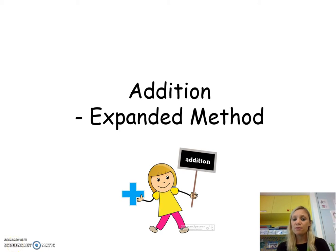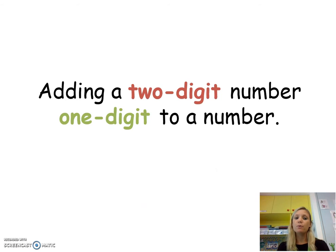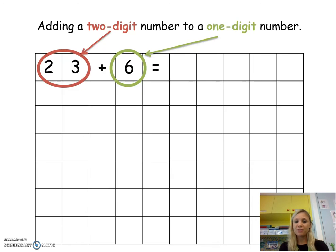Hi, my name is Miss Helen and today I'm going to go through addition with you looking at the expanded method. So first of all we're going to be adding a two-digit number with a one-digit number. As you can see, 23 is a two-digit number and we're going to add that to 6, which is a one-digit number.